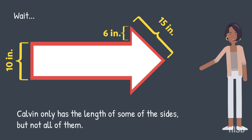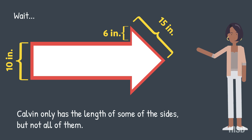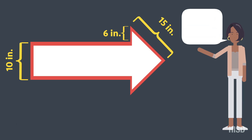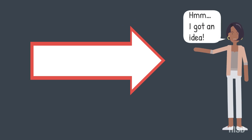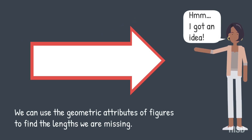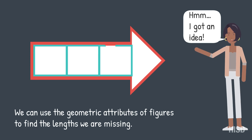Calvin only has the length of some of the sides, but not all of them. I got an idea — we can use the geometric attributes of figures to find the lengths we are missing.